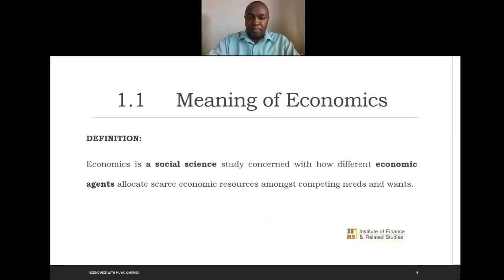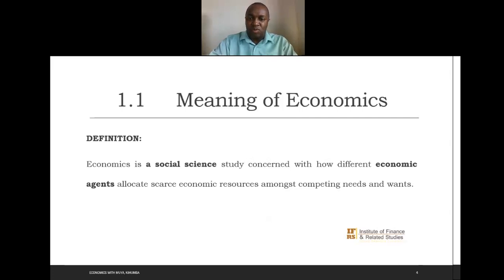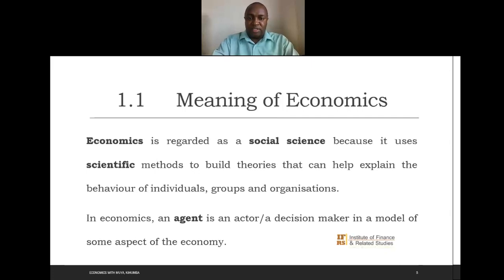We start by defining what economics is. Economics is a social science that is concerned with how different economic agents allocate scarce resources amongst competing needs and wants. When we talk of economic agents we may as well be referring to the society. We'll talk about why we refer to economics as a social science, and we'll talk about scarcity and economic resources.